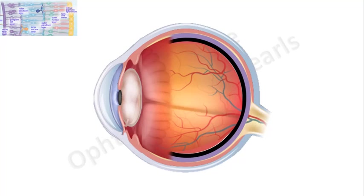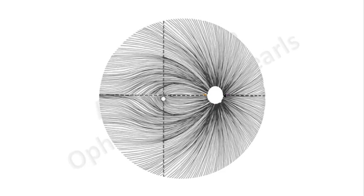The axons in the nerve fiber layer travel from their place of origin to converge upon the optic disc and leave the eye as the optic nerve. Hence, you would expect that all the nerve fibers would converge in this manner. However, that is not the case.